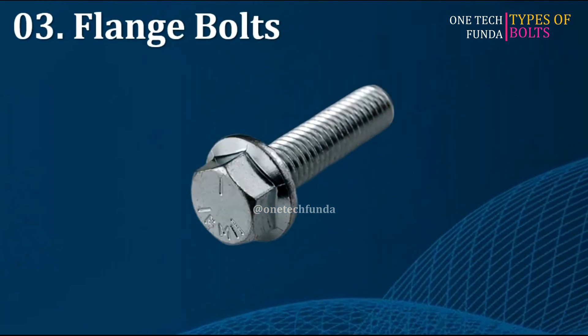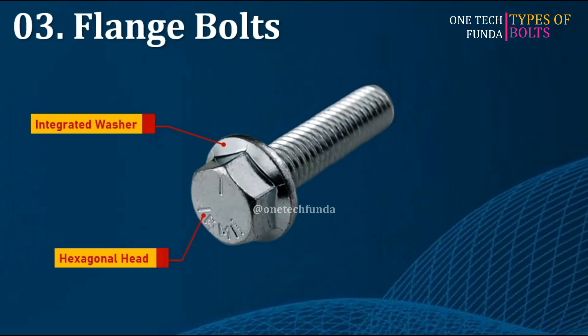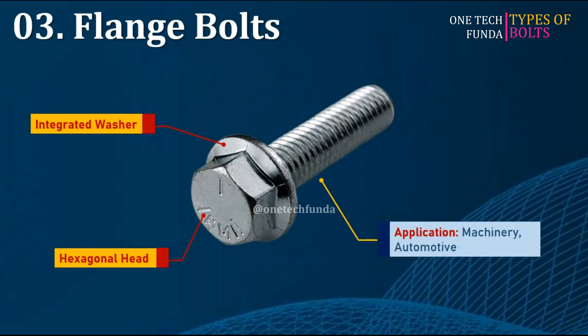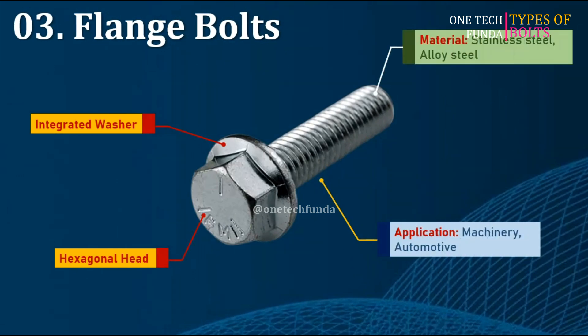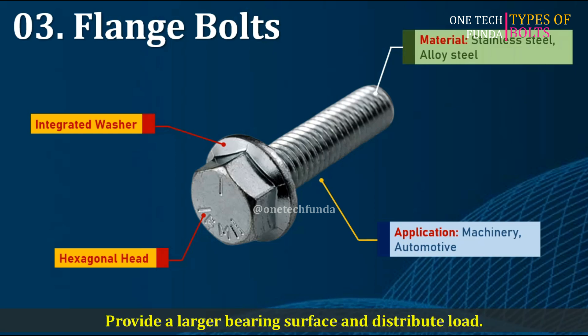Flange bolts feature a hex head with an integrated washer-like flange. Often used in automotive and machinery applications. Materials include stainless steel and alloy steel. The main advantage is they provide a larger bearing surface and distribute load.